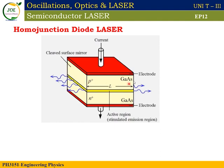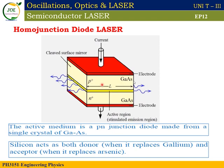This is the construction of the homo junction diode laser. This is a P-type semiconductor and this is an N-type semiconductor, forming a PN junction. This PN junction diode has two metal plates — one metal plate on the P-type side and one metal sheet on the N-type side. These serve as electrodes, connected by wire.